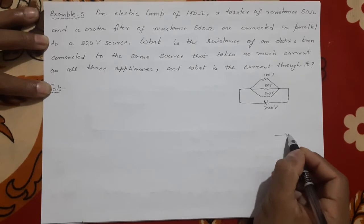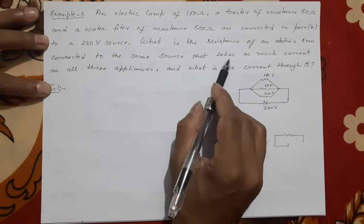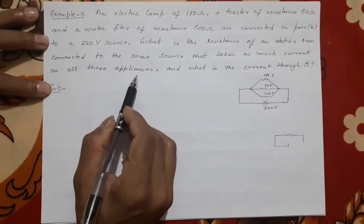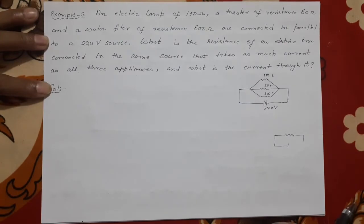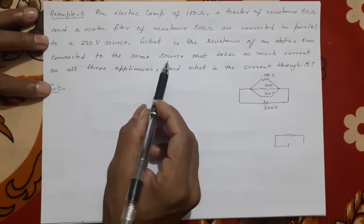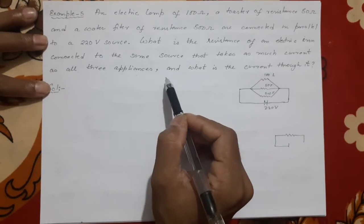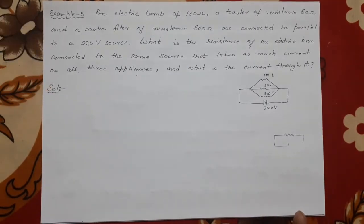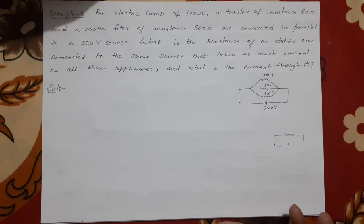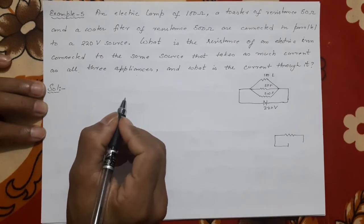Separately connected and that takes as much current as all the three appliances, and what is the current through it. What is the resistance of an electric iron connected in the same source that takes as much current as all the three appliances? What is the current through it?